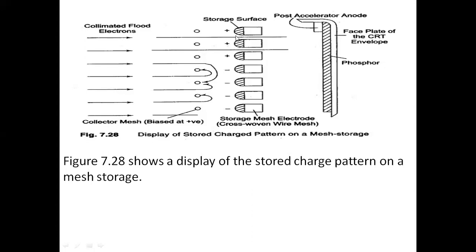The positive charge carriers on the storage mesh are formed by the writing gun. The writing gun produces a beam of electrons through the vertical and horizontal deflection system. When those electrons hit the storage surface, that particular area becomes positively charged, and the remaining area becomes negatively charged.